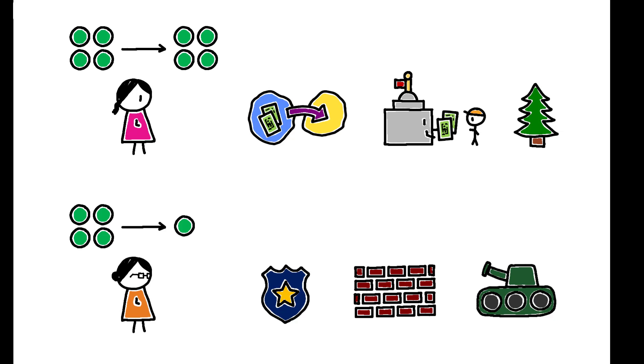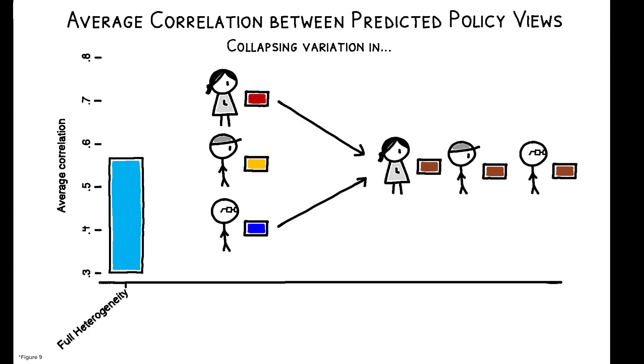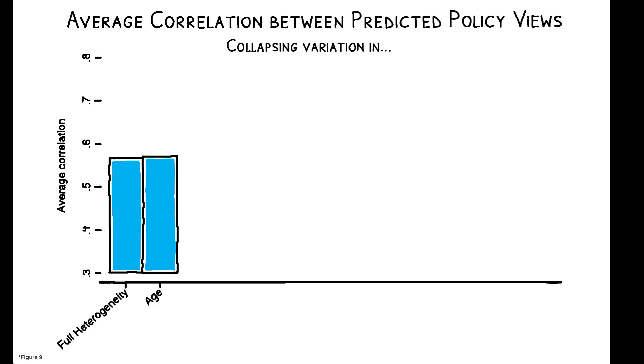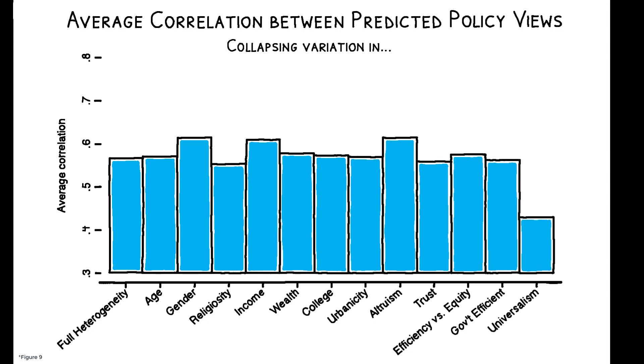This indicates that universalism quantitatively matters for policy views, but the paper argues that it also drives the particular intracorrelations we observe. This figure shows the average intracorrelation in predicted policy views in the survey data. Starting from this benchmark, the authors ask how much this correlation would change if all the variation in a given characteristic was collapsed to its sample mean. For example, this bar shows that eliminating variation in respondents' age has little impact on the intracorrelation in their policy views. In other words, differences in age don't explain why policy views are correlated in the particular way we observe. The same is true for other characteristics, with one notable exception. Eliminating variation in universalism substantially reduces the intracorrelation in policy views, which indicates it is the only variable here that meaningfully contributes to ideological constraint.